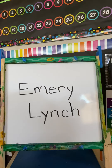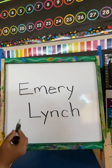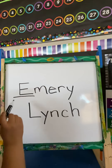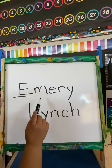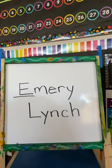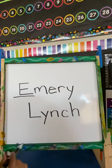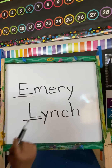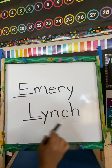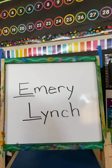Now, your name always begins with an uppercase letter. So uppercase E and then lowercase M-E-R-Y for Emory. And your last name, uppercase L and then lowercase Y-N-C-H for Lynch. Emory Lynch — and that's how you write your name.